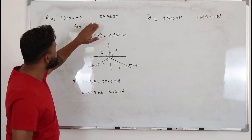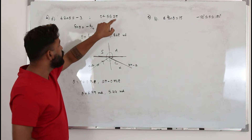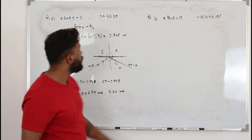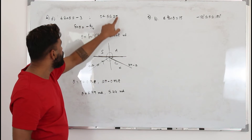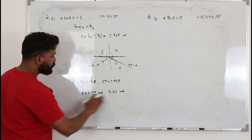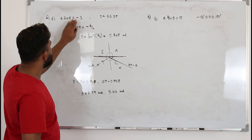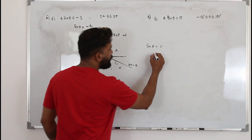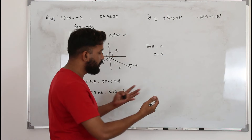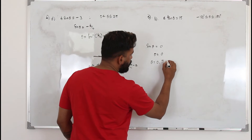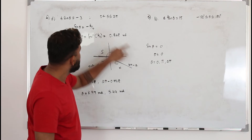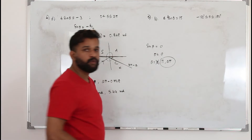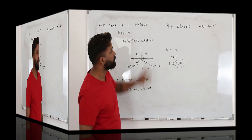Before moving on, I want to explain something important. When you consider the limit, be very careful about the inequality sign — it has to be less than or equal to. If it's strictly less than, this is how they can trick you. For example, if the equation is sin θ = 0 and the limit is 0 < θ ≤ 2π, then sin⁻¹(0) = 0, giving solutions at 0, π, and 2π. But because theta must be strictly greater than 0, you cannot include 0. You have only two solutions: π and 2π. That's why you need to be very careful about this symbol.